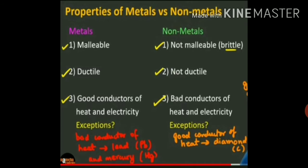Non-metals are not malleable. The property due to which non-metals break into pieces on hammering is called brittleness. Non-metals are generally brittle. For example, sulphur and coal break up into small pieces on hammering. However, some non-metals such as hydrogen and oxygen in gaseous state and bromine in liquid state do not show the property of brittleness. So metals are malleable and non-metals are not malleable.